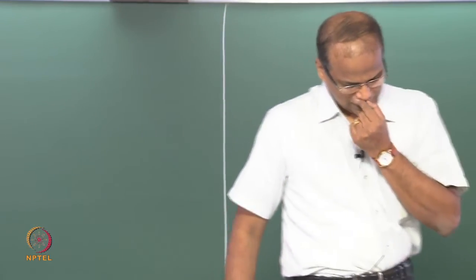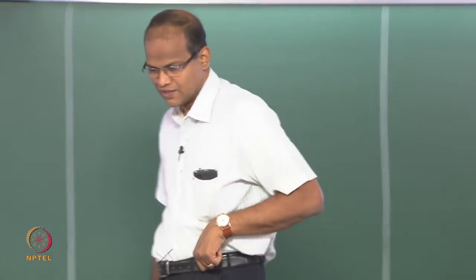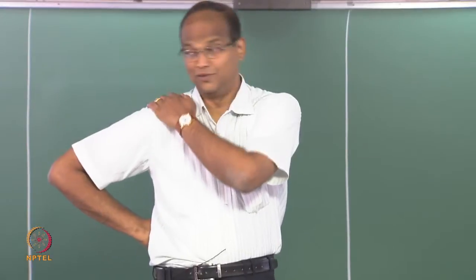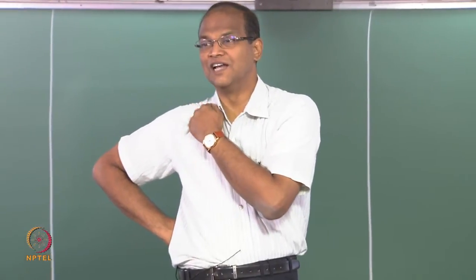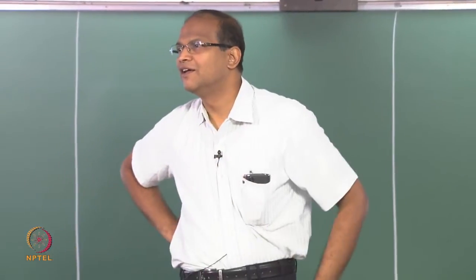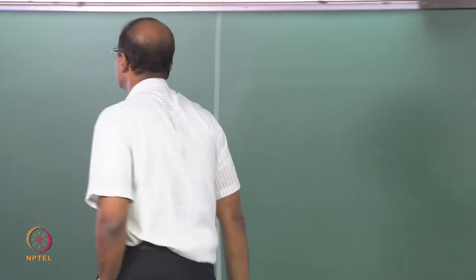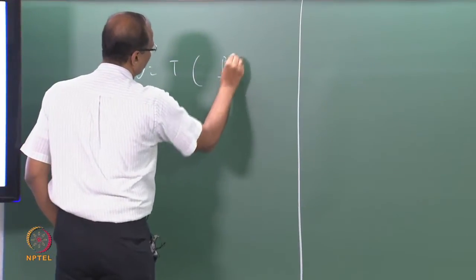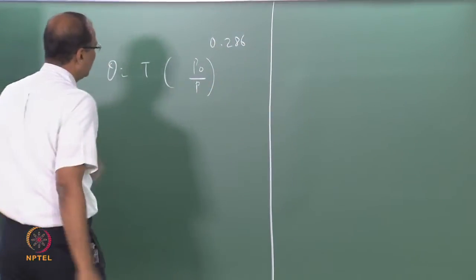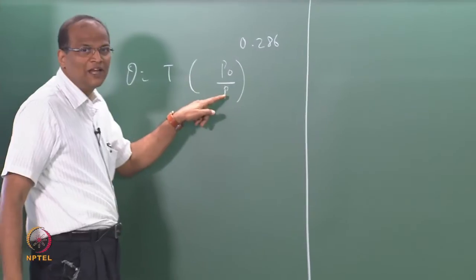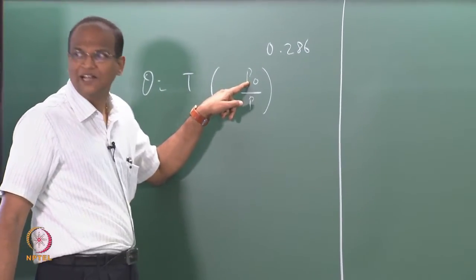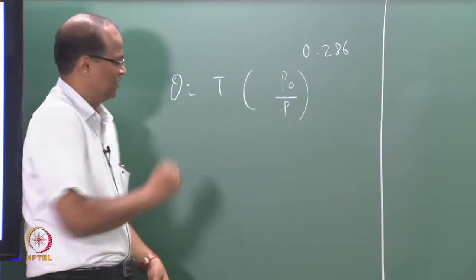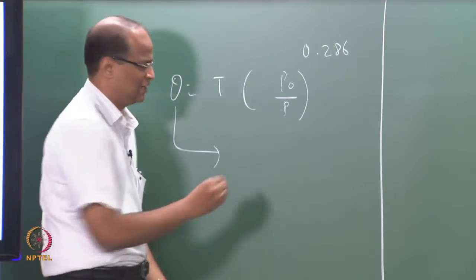So, good morning. In the last class, we discussed the Poisson's equation and we proved a set of equations or relations which are going to be very useful in the study of atmospheric thermodynamics. The first was that theta, from initial temperature T to P, if you adiabatically expand or compress to a standard pressure of 1000 hPa, the temperature which the air parcel finally takes is the potential temperature.